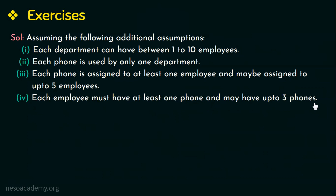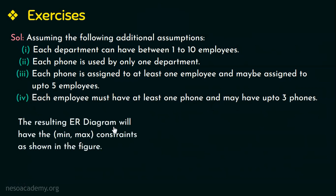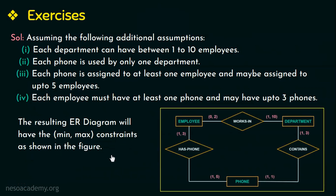With these assumptions the resulting ER diagram will have the min-max constraints as shown in the figure. Since we have to write the min-max constraints on all the entity types in the figure, we need to have additional assumptions, because with the given information in the question we cannot write min-max constraints for all the entity types. Now let us see the min-max constraints in this figure.